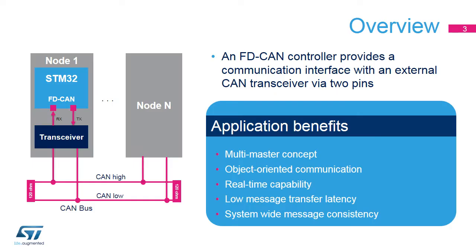The Flexible Data Rate Controller Area Network, or FD-CAN, is a standard serial differential bus broadcast interface that enables the microcontroller to communicate with external devices connected to the same network bus. The FD-CAN interface is highly configurable, enabling nodes to easily connect using just two wires.